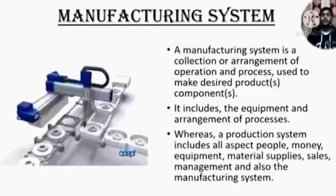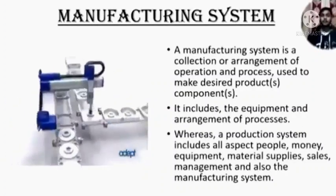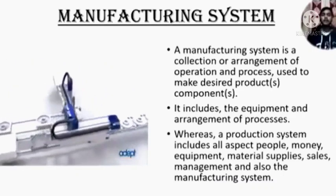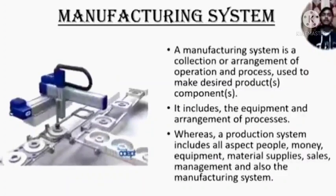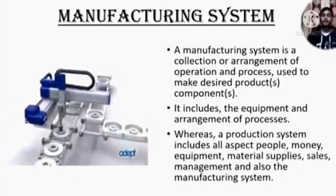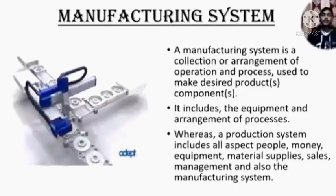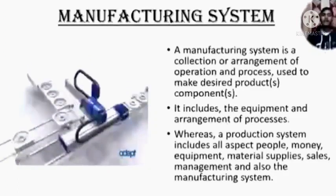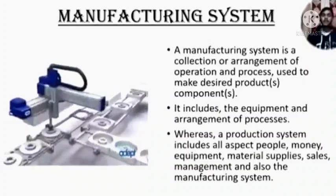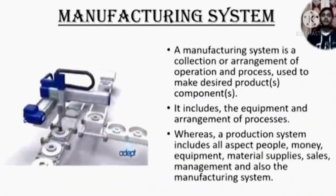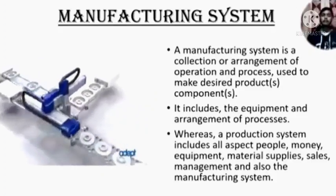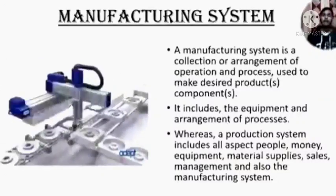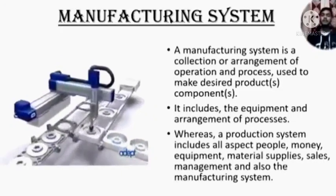The next one is manufacturing system. A manufacturing system is a collection or arrangement of operations and processes used to make a desired product or components. It includes the equipment and arrangement of processes. Whereas a production system includes all aspects such as people, money, equipment, material supplies, sales, management and even the manufacturing system itself.